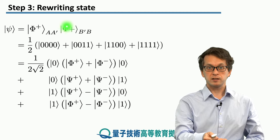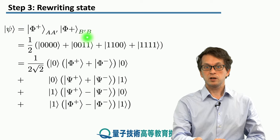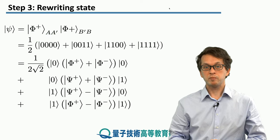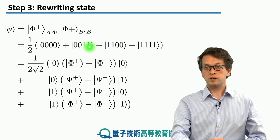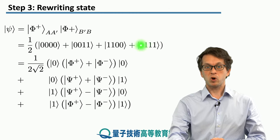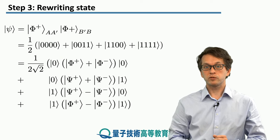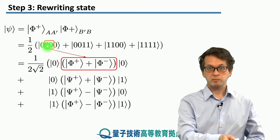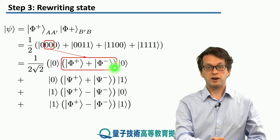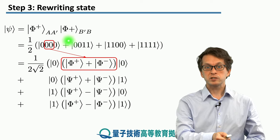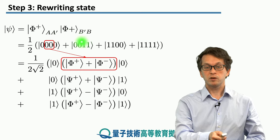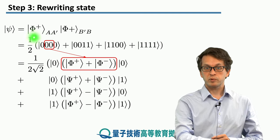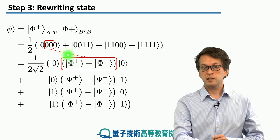Let's get back to our initial state. We said the initial state is two Bell states phi-plus in a tensor product between A, A' and B', B. If we write it out, we get an expression in the computational basis — a superposition of four terms. Now we use our identities. We said |00⟩ can be rewritten as a superposition of phi-plus and phi-minus. We are going to perform a measurement on A' and B' in the Bell state basis, which is why we want to re-express those qubits from the computational basis into the Bell state basis.